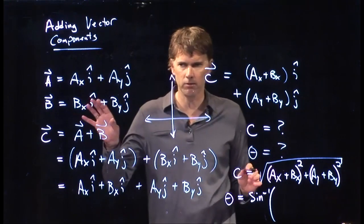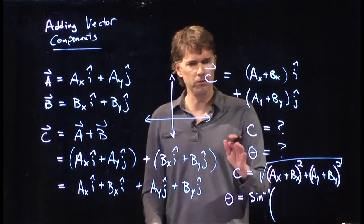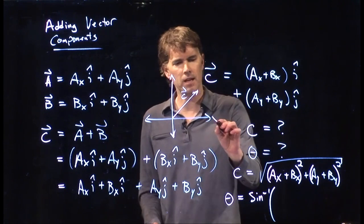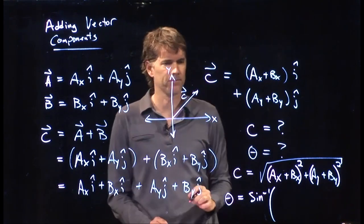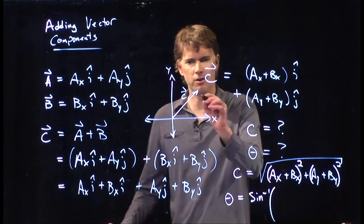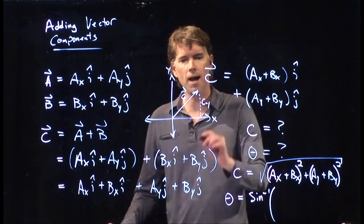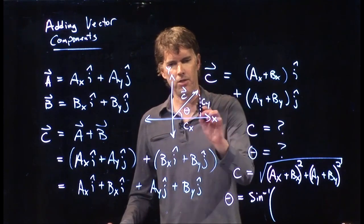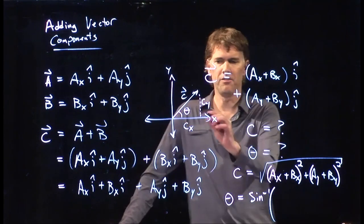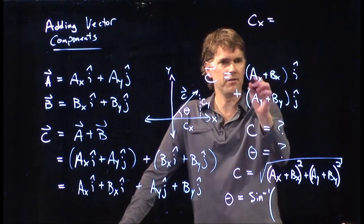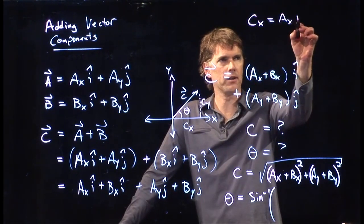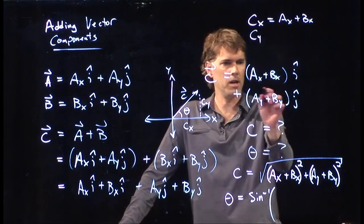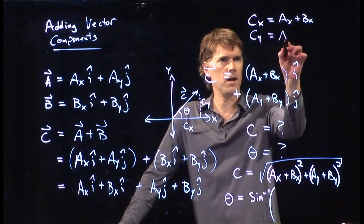We don't know exactly what A is. We don't know exactly what B is. But what we do know is that C is going to be some vector in this XY space. And that vector is going to have a Cy component and a Cx component. And it's going to be at an angle theta. The Cx component is just this stuff right here, Ax plus Bx. The Cy component is going to be the other stuff right here, Ay plus By.